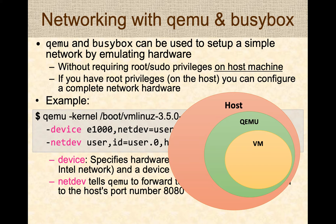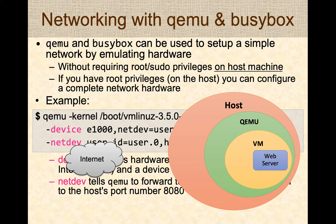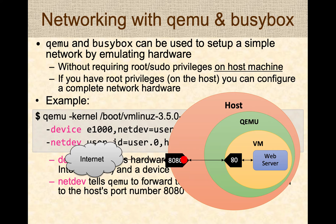We are running a host machine, inside which we run QEMU, and inside QEMU we run a virtual machine. Inside the virtual machine, we might run a web server that wants to interact with the internet. We take port 8080 on the host — any available port — and tie it to port 80 inside the virtual machine. QEMU does the necessary work to establish the connection, so the virtual machine appears to write to port 80, but QEMU pushes the data to port 8080 on the host, which connects to the internet.